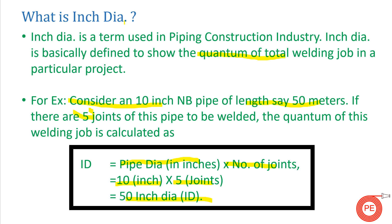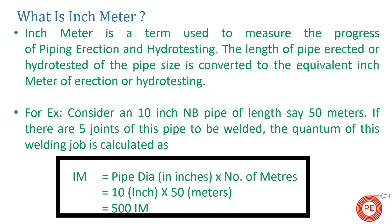Suppose you are working in a construction project and at the end of the day your boss asks how much work you have done in terms of welding. You will answer that you have done 50 inch dia of work. On this basis we calculate planned work, total work, how much work is left, and how much has been done.